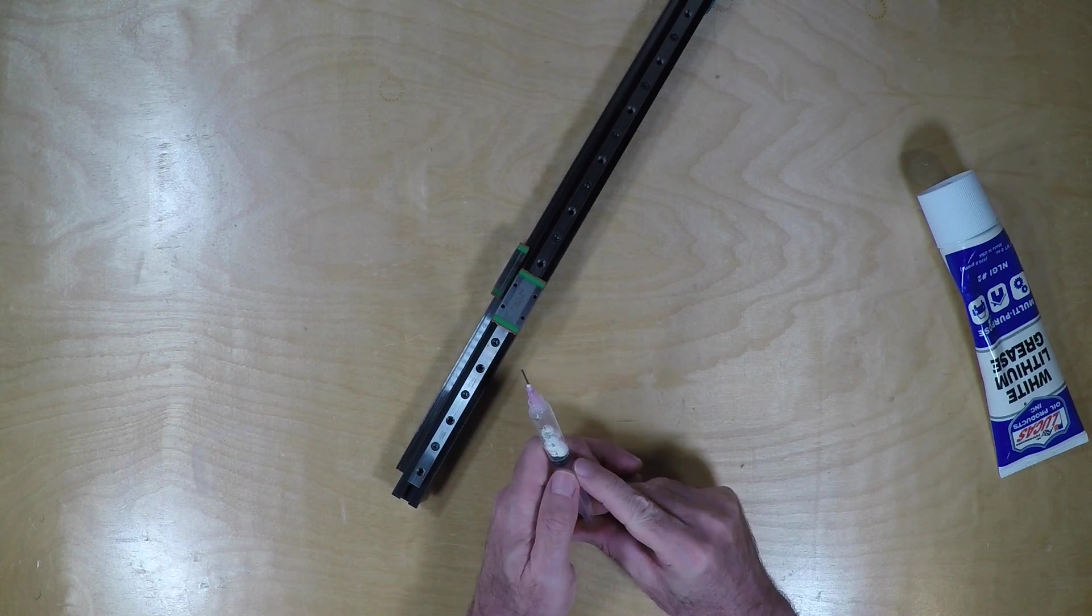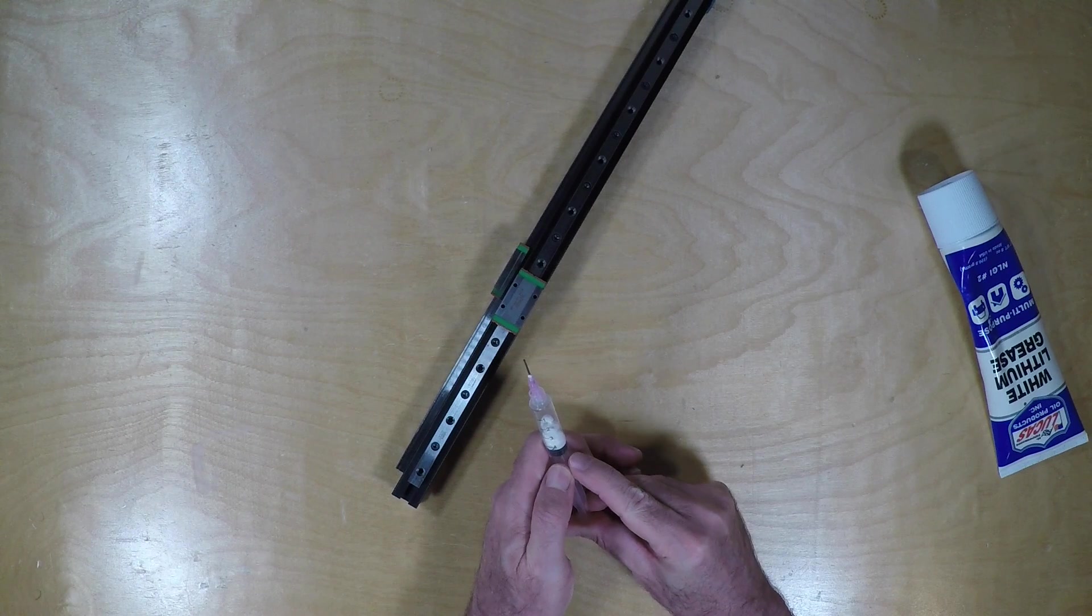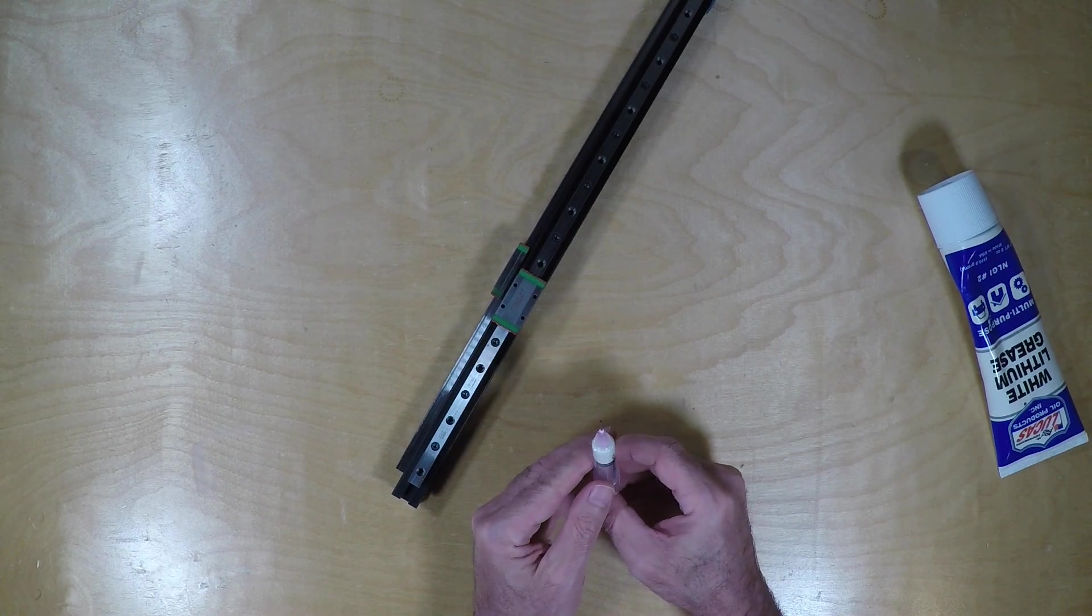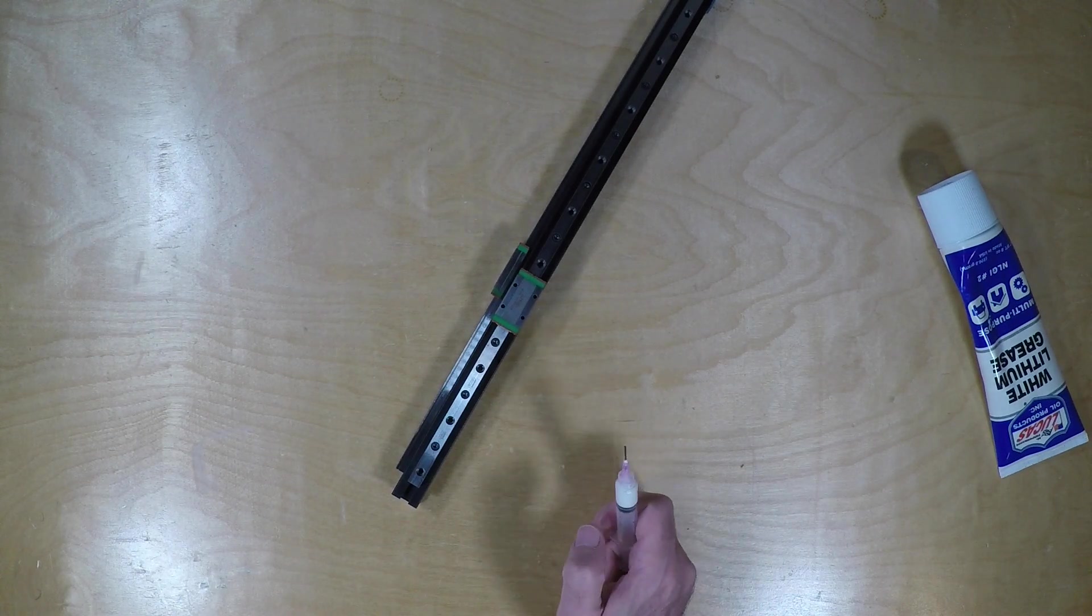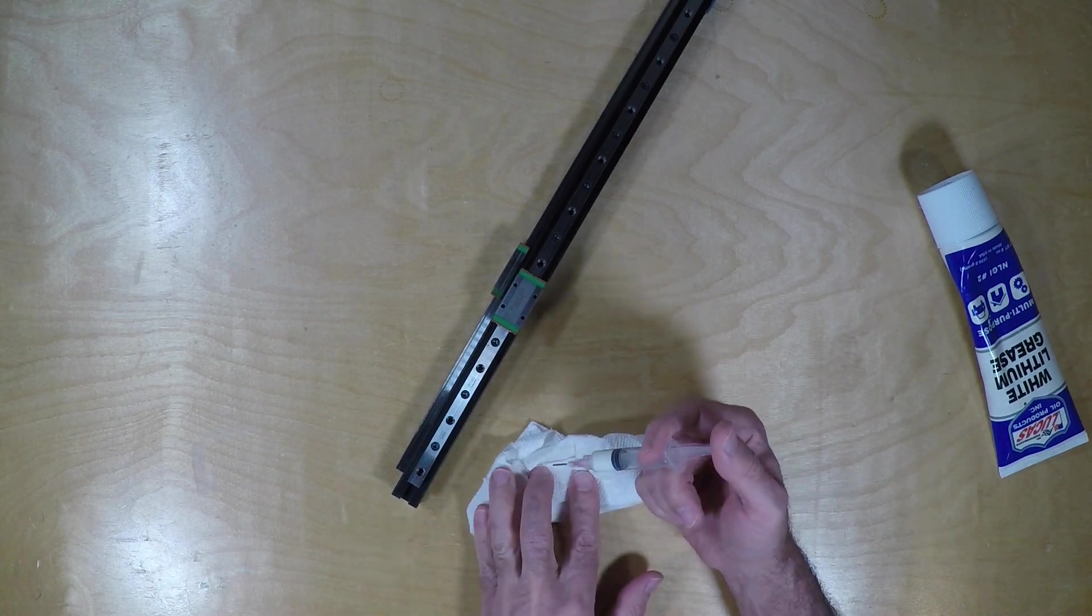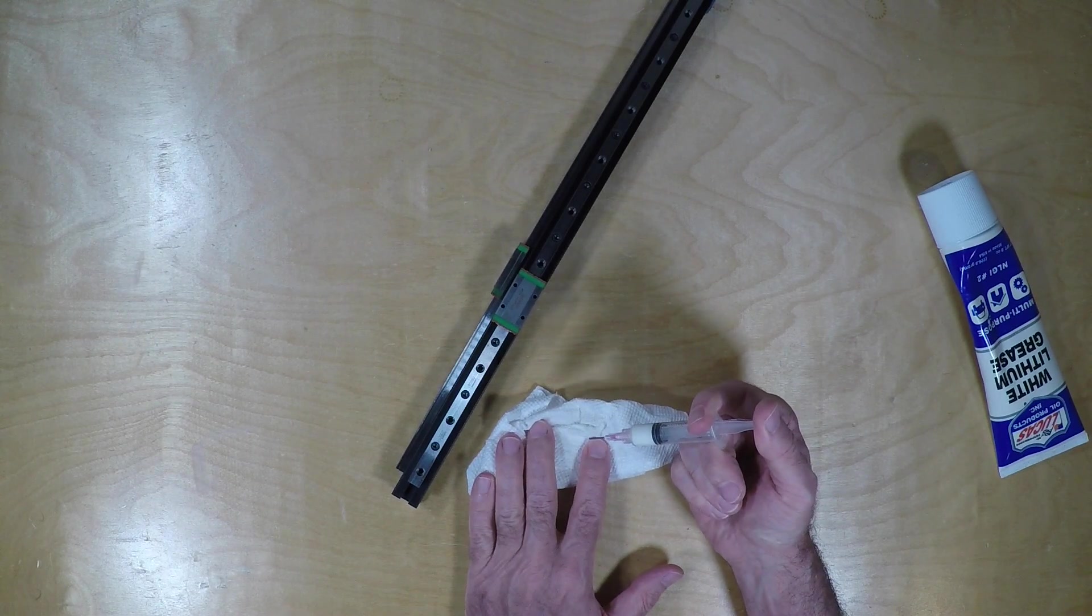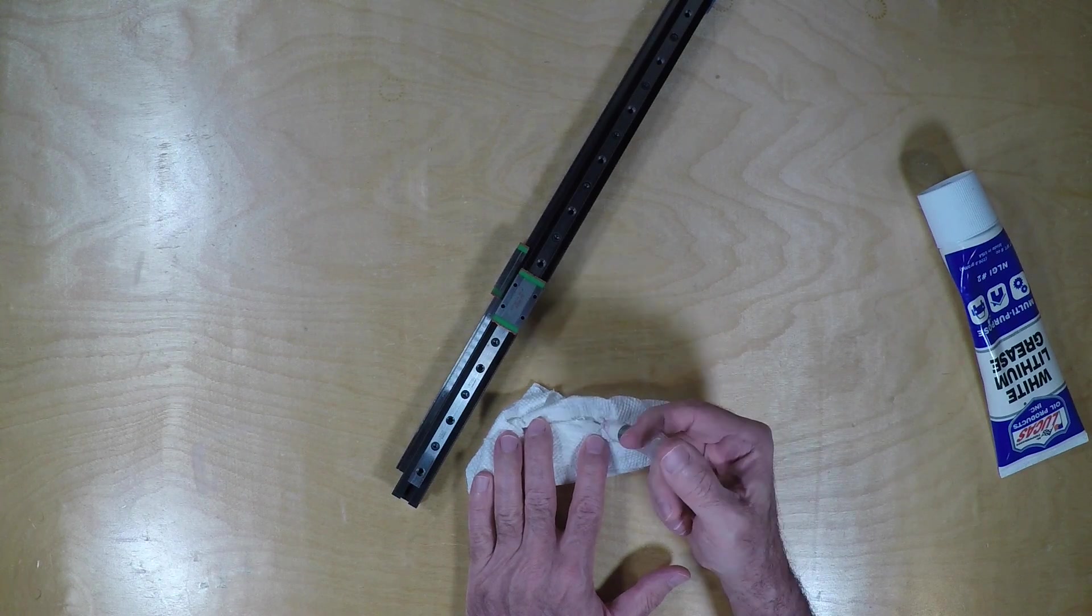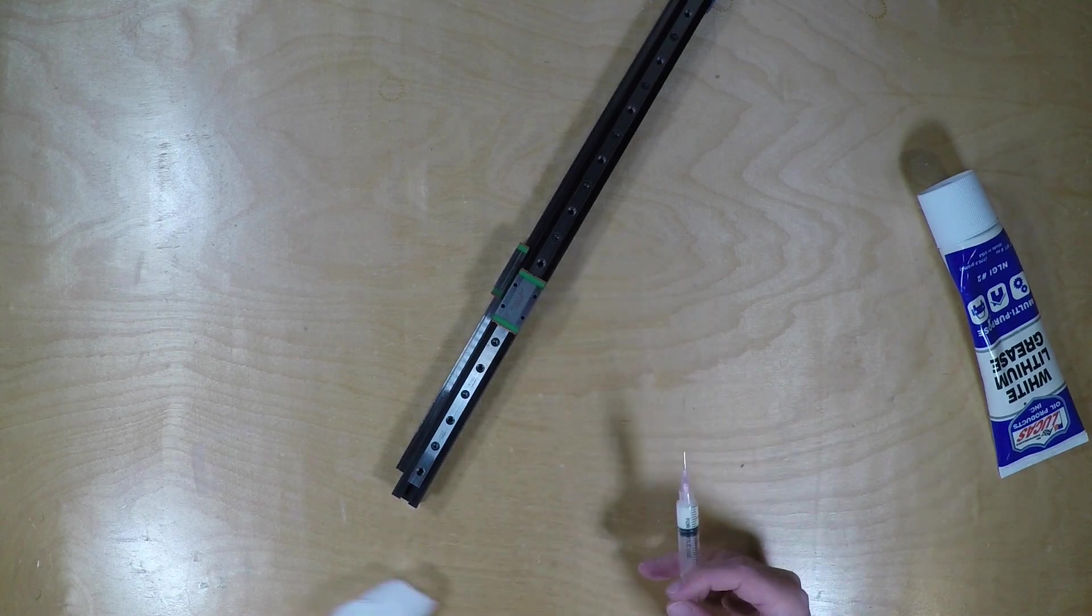So just reinsert the plunger and give it a little push. Get rid of some of that air space. It's probably worthwhile to squeeze just a little bit more to get a little bit out, and we'll clean the tip off. It's ready to go.